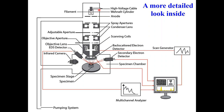Here you can see the high voltage cable that is connected to the filament in order to generate electrons. We have the Wehnelt cylinders, then the anode, the spray apertures, condenser lenses, adjustable aperture, scanning coils, objective aperture, objective lens, and the detectors. This detector is basically the EDX detector, and here we have the end product camera, the secondary electron detector, and the backscatter electron detector.